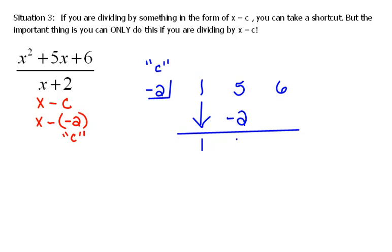So 5 and negative 2 would be 3, and then we repeat the process. We multiply diagonally, so negative 2 times 3 would be negative 6, and then we combine up and down. 6 and negative 6 is 0.